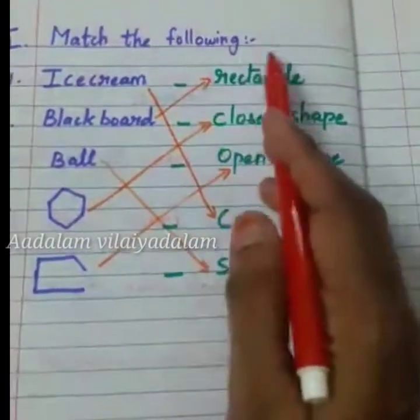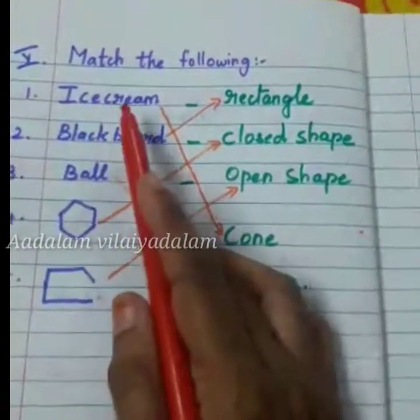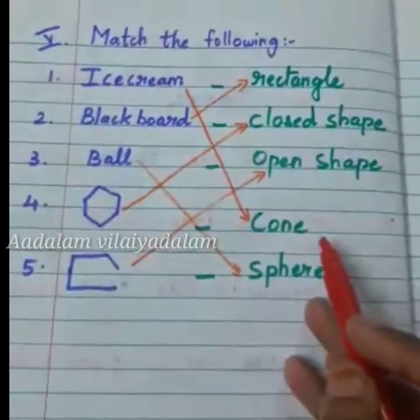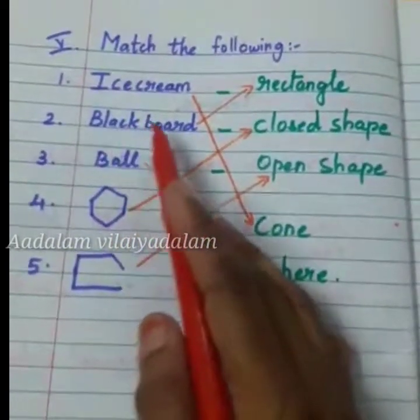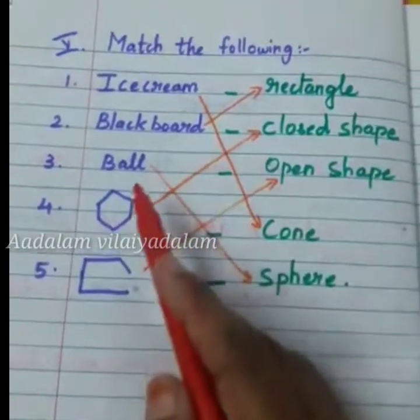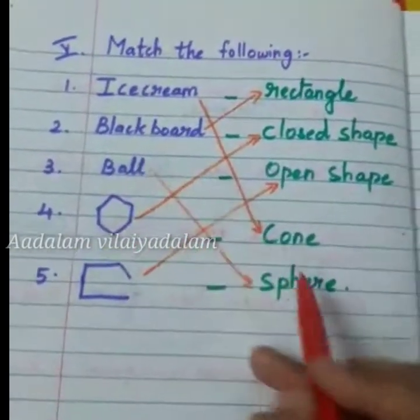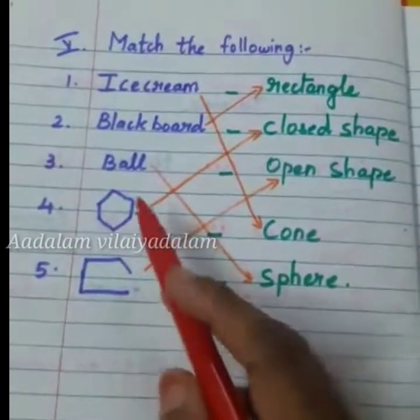Match the following. An ice cream is the shape of a cone. A blackboard is the shape of a rectangle. A ball is the shape of a sphere.